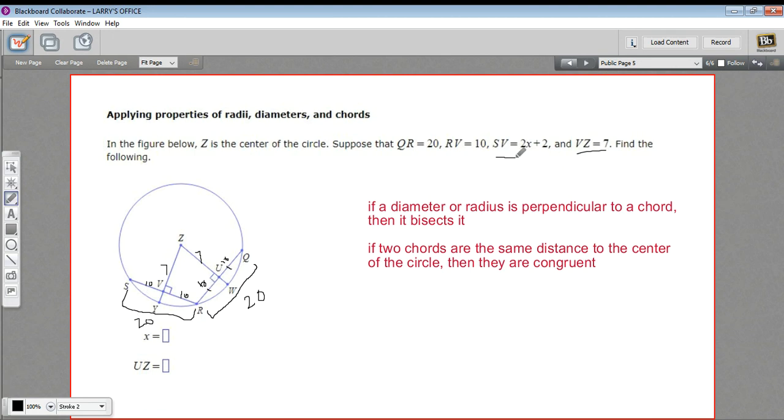Oh, wait. They said SV equals 2X plus 2. So SV is 10. So we can say 2X plus 2 equals 10. And then we can just solve for X to get the value of X. So subtract 2 here. We'd get 2X equals 8. Divide by 2. And we get X equals 4.